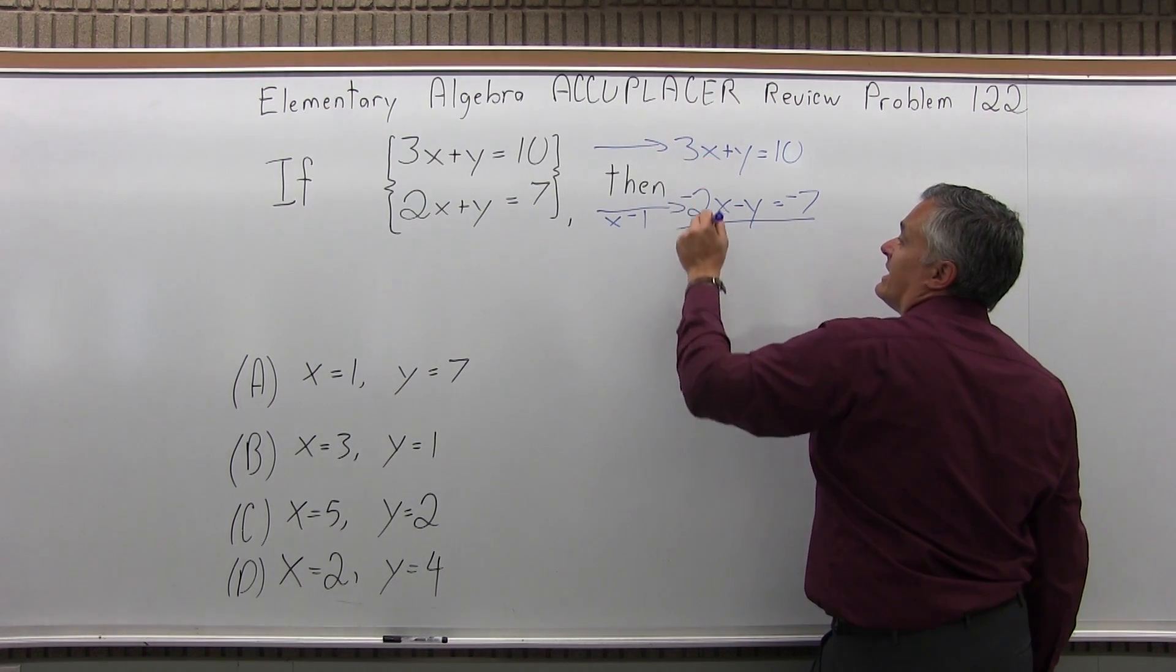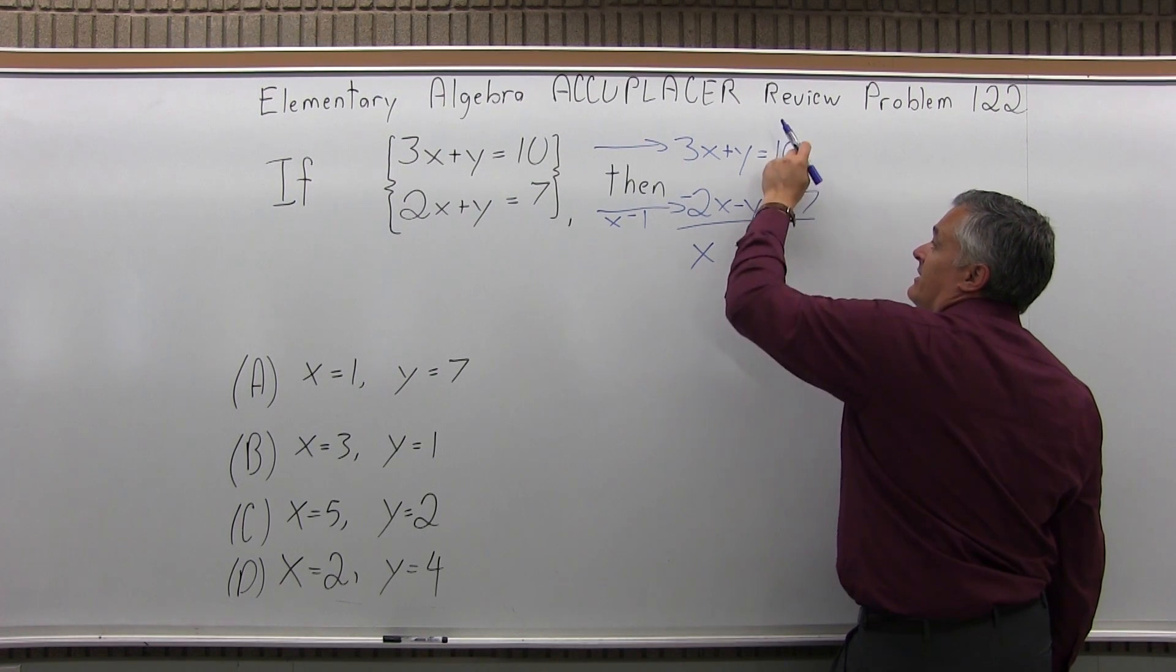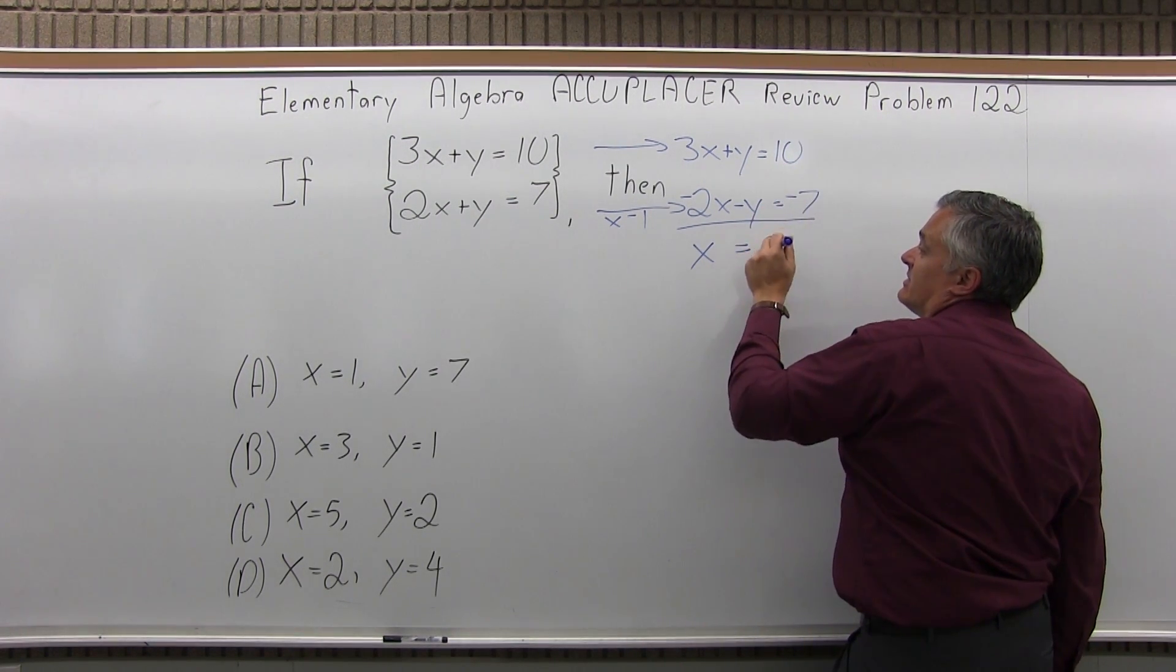Now if I add them together, 3x and negative 2x is x, positive y, negative y cancels, 10 and negative 7 is 3, x is 3.